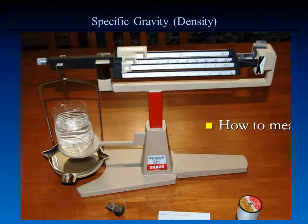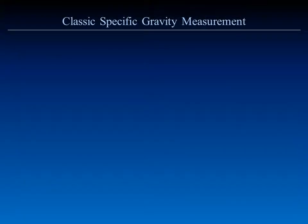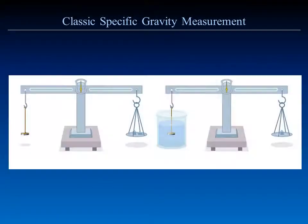The classic method for measuring specific gravity and density usually involves a lab balance scale and a glass of water to suspend the mineral in. Let's review the classic method of measuring specific gravity as taught in textbooks.